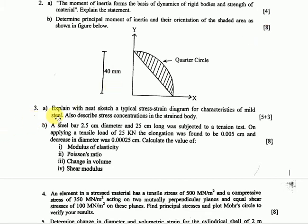Question number three part A is theory — describe the concentration of strain using max values. Part B is a numerical using double the max value. This is from Chapter 3: Simple Stress and Strain analysis.